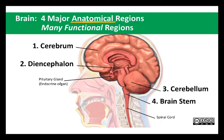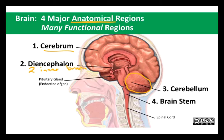First we have the cerebrum, which is the largest part of the human brain. Then we have the diencephalon, which means second inner brain. Next we have the cerebellum, or the tiny brain, and then finally we have the brain stem, which extends into and is continuous with the spinal cord.